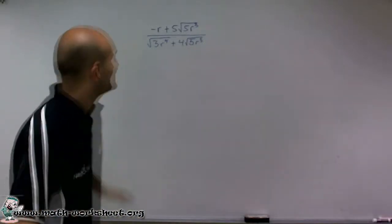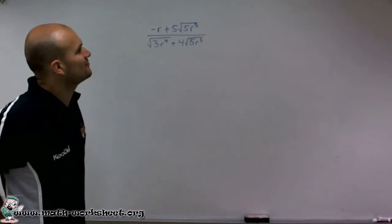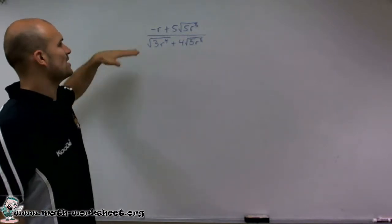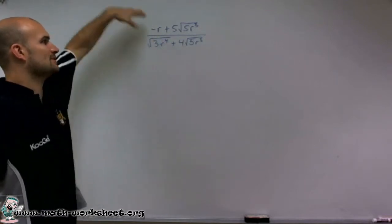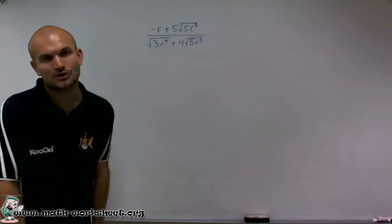Welcome. All right, here we go. What we have is negative r plus 5 times square root of 5 times r cubed divided by square root of 3 r to the fourth plus 4 times square root of 5 times r cubed.